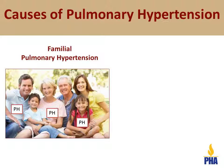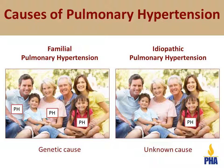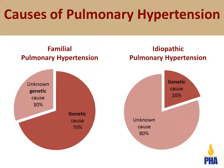In some families, there are multiple members affected with the disease and it is clear that the family has a genetic form of pulmonary hypertension. For other families, there may be only one person with pulmonary hypertension, but the family may still have a genetic form. It is possible that other members had pulmonary hypertension in the past but were not correctly diagnosed. For approximately 20% of individuals with idiopathic pulmonary hypertension, the cause is genetic even though there is no known family history of it.